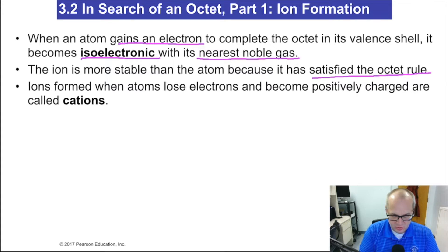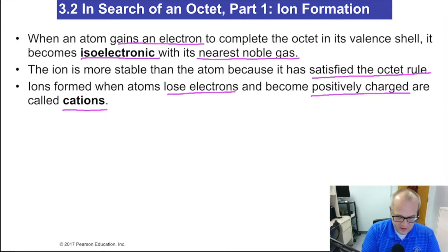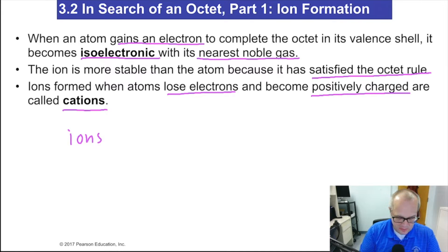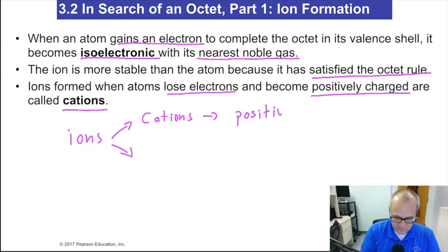Ions form when atoms lose electrons, become positively charged, and are called cations. Ions are charged particles. From ions, we get cations, which are positive, and we get anions, which are negative.